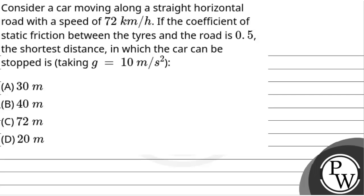Hello! Let's read the question. The question says: consider a car moving along a straight horizontal road with a speed of 72 km per hour. If the coefficient of static friction between the tyres and the road is 0.5, the shortest distance in which the car can be stopped is — taking g equal to 10 m per second square.